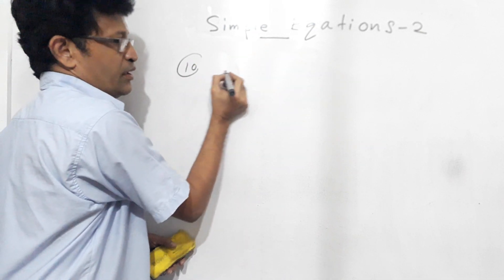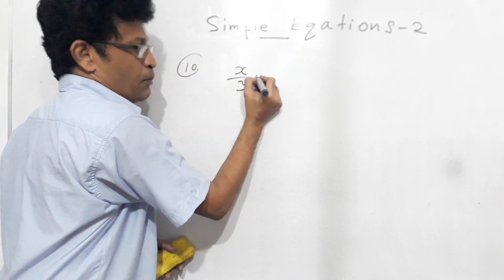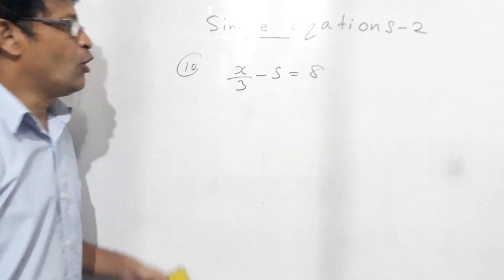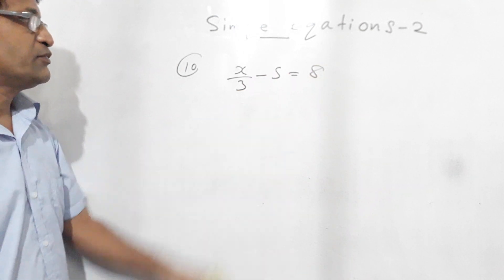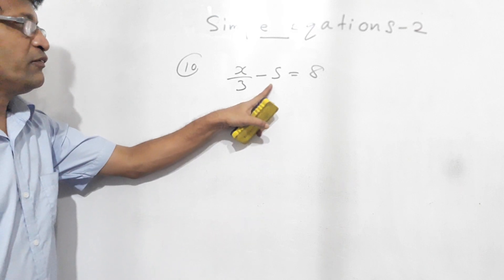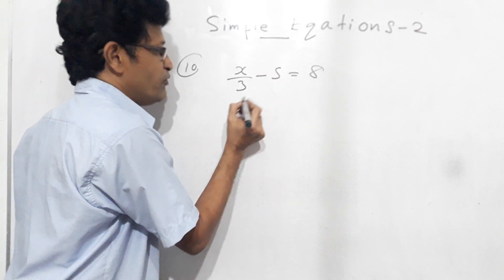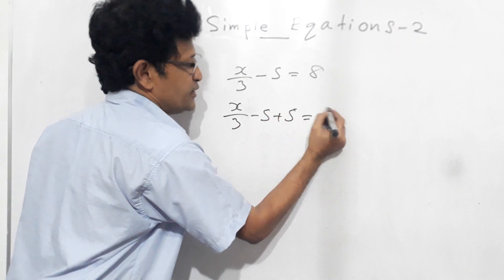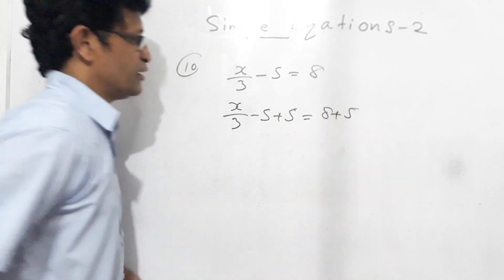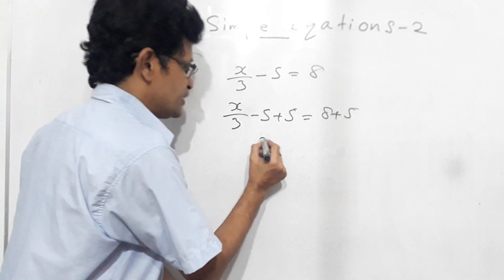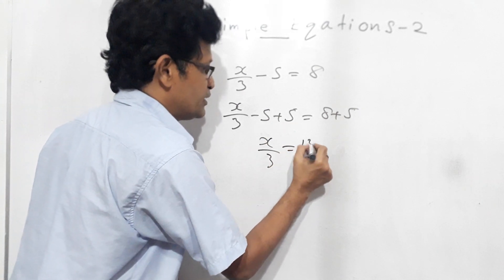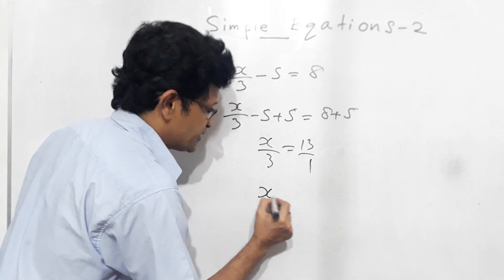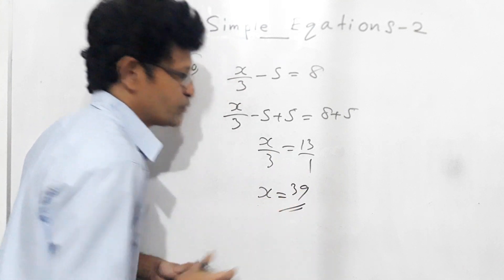Now the tenth question: x over 3 minus 5 equals 8. To get rid of minus 5, add 5 to both sides — the minus 5 and plus 5 cancel — leaving x over 3 equals 13. Since 13 means 13 over 1, cross multiply: x equals 3 times 13, which is 39.